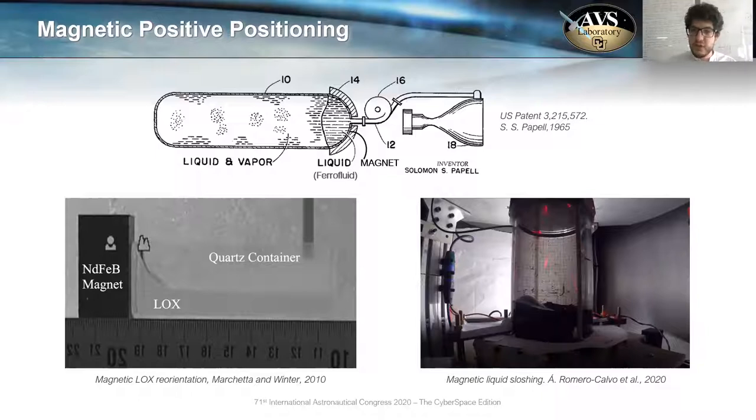It was at the same time when Solomon Papell invented ferrofluids to enhance the magnetic properties of liquids in low-gravity. All these works have continued until nowadays. You can see, for instance, the efforts of Marchetta and Wintner on the study of liquid oxygen reorientation in low-gravity, or our own works in magnetic liquid sloshing, which is an evolution of this previous research.